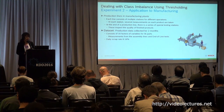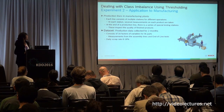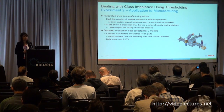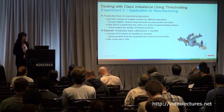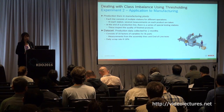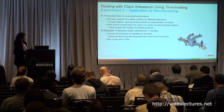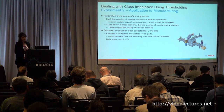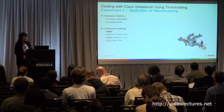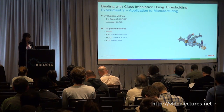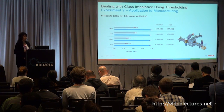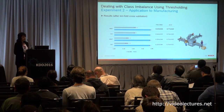For the application in manufacturing, each line consists of multiple stations with different operations, and at each station several measurements of the product are taken. At the end of the line there's a series of special tests inspecting quality. The dataset consists of 16 features for 5,000 parts, with measurements from assembly lines and end-of-line tests as features. The daily scrap rate ranged from 6 to 16%. Our method showed significantly better performance than most other methods, based on tenfold cross-validation.